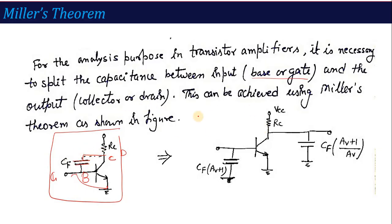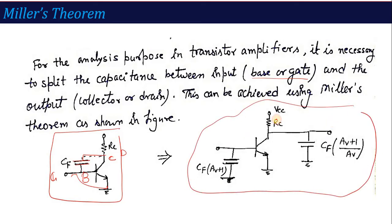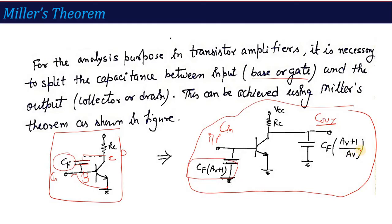According to Miller's theorem, the capacitance between input and output divides into two parts: one on the input side, called C_input (Miller), and one called C_output (Miller). On the input side, we calculate: C_in = Cf × (AV + 1), where AV is the voltage gain calculated using H-parameter formulas. On the output side, C_out = Cf × (AV + 1) / AV, which is approximately equal to Cf, since AV >> 1.